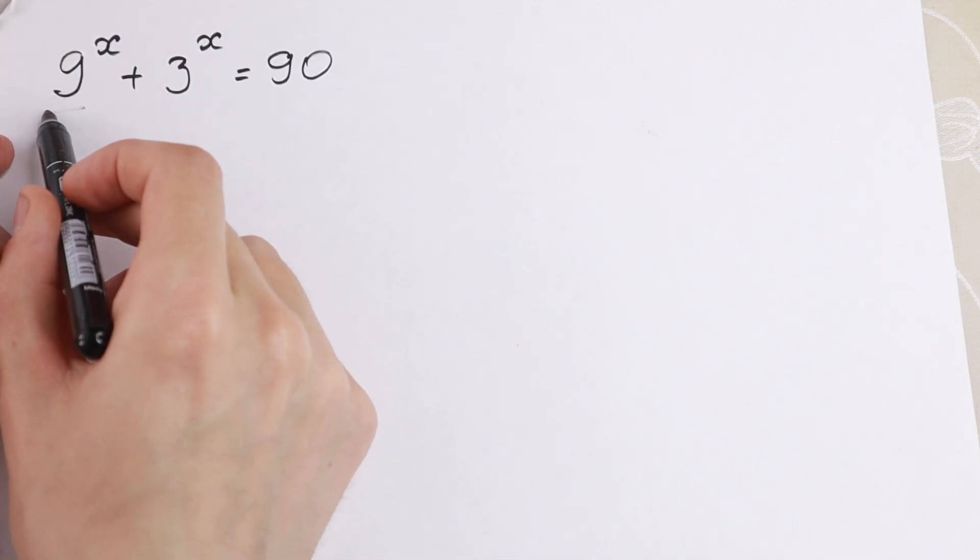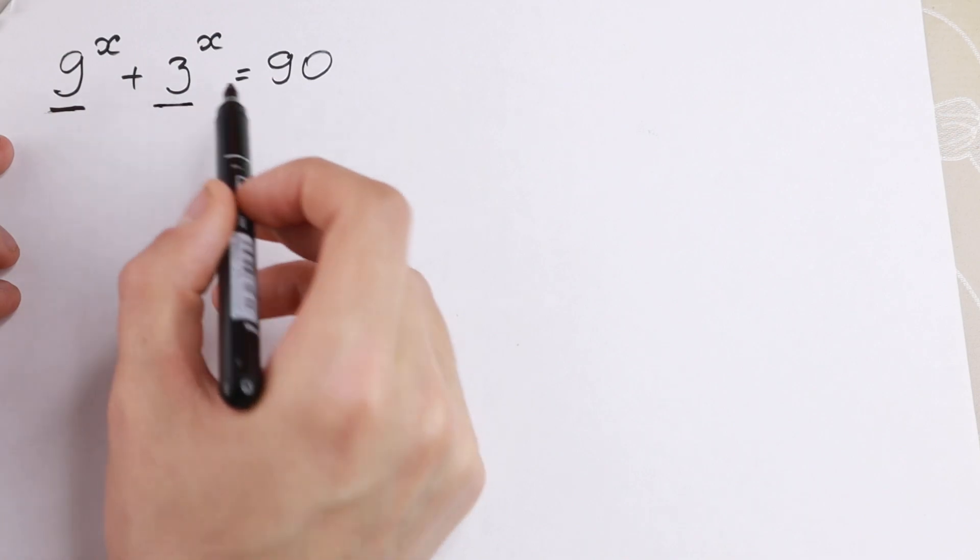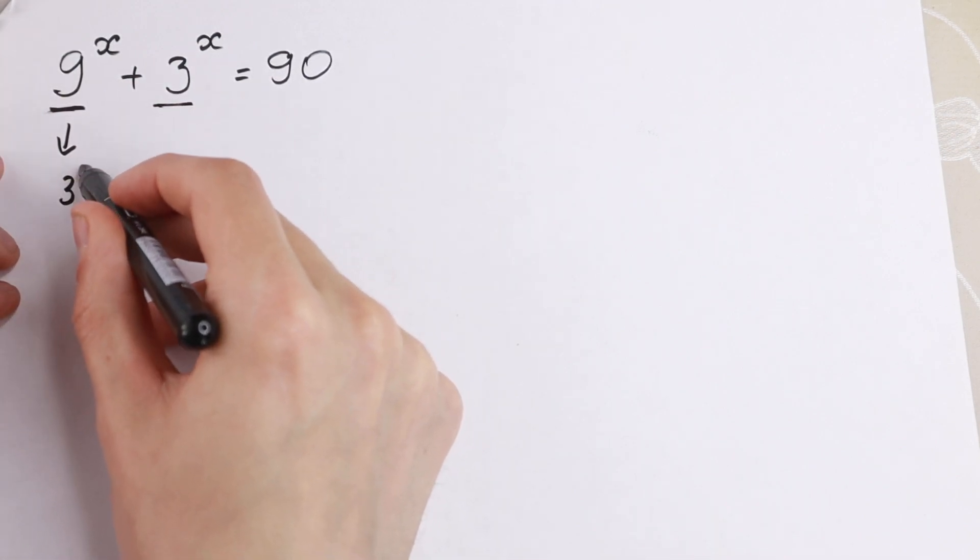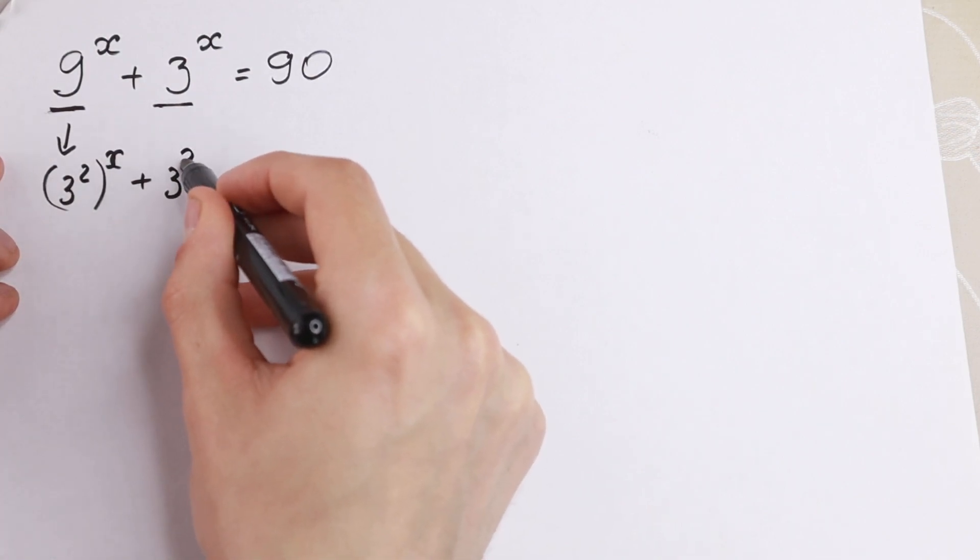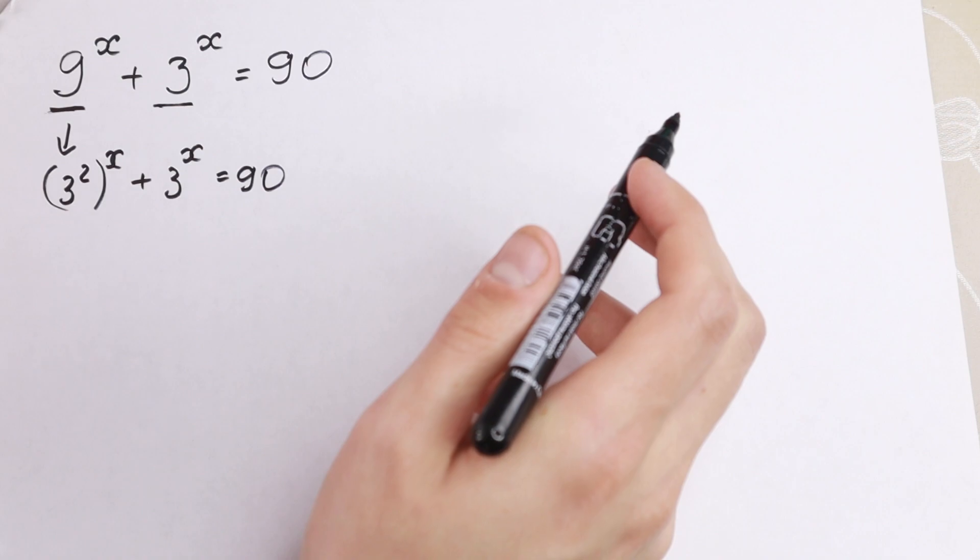This is the case because we have 9 and 3. And we can express this 9 as 3 squared to the power x plus 3 to the power x equal to 90. And take a look.